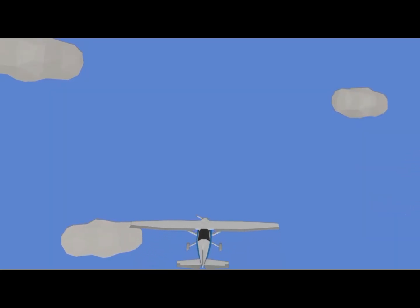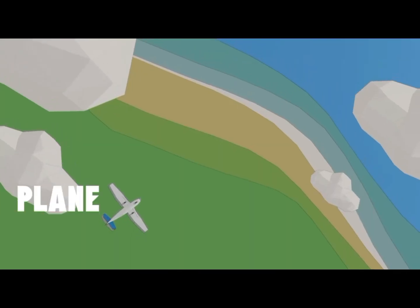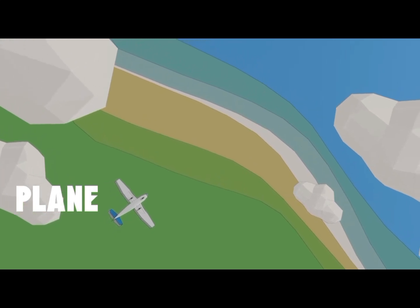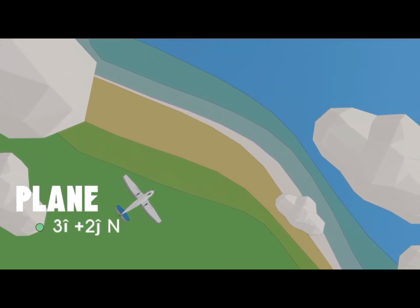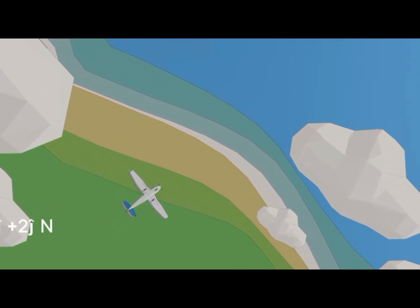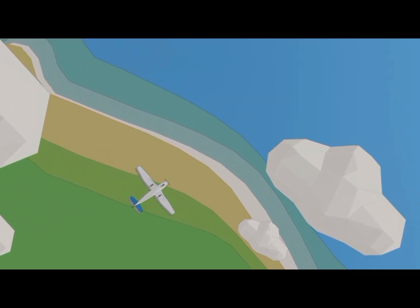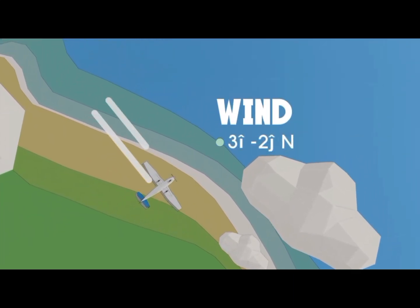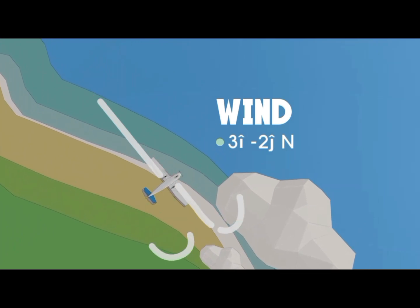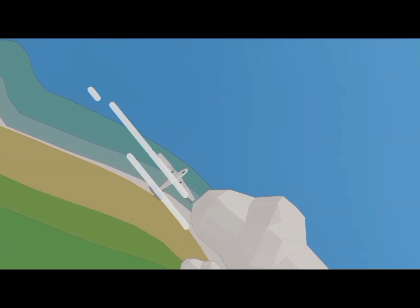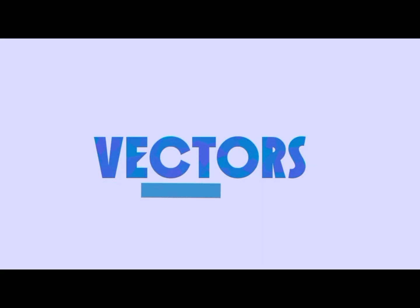Imagine a situation: a plane is flying across the sky whose force is given by this vector, and then suddenly wind starts blowing towards the plane whose force is given by this vector. You are given the task of finding out the motion of the plane after this interaction. But wait — you don't know what a vector is.